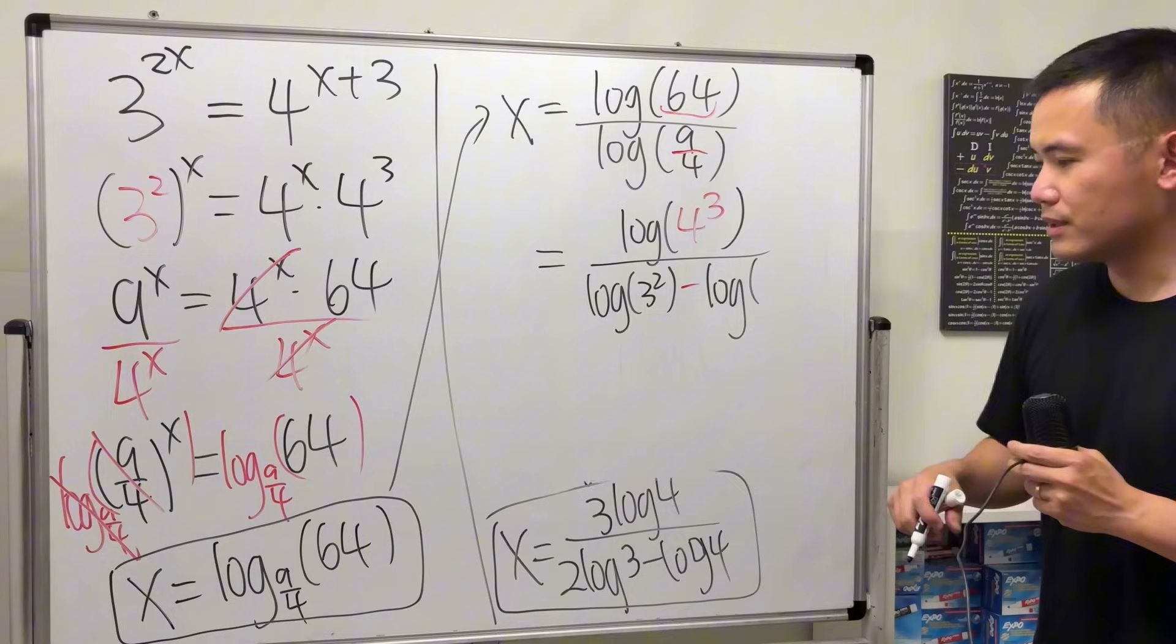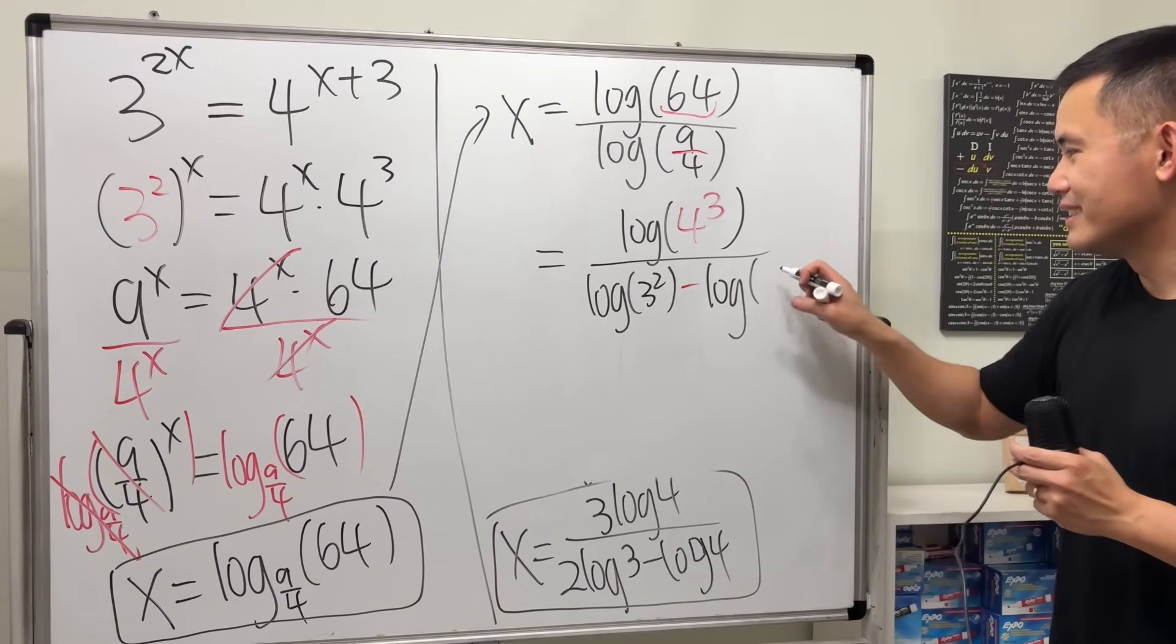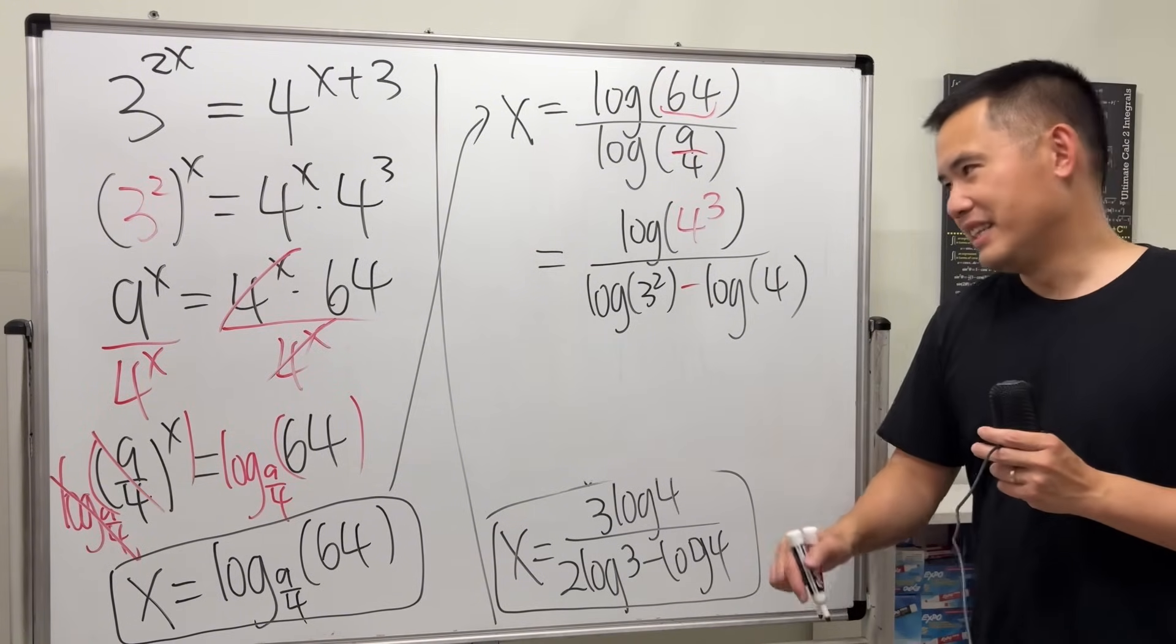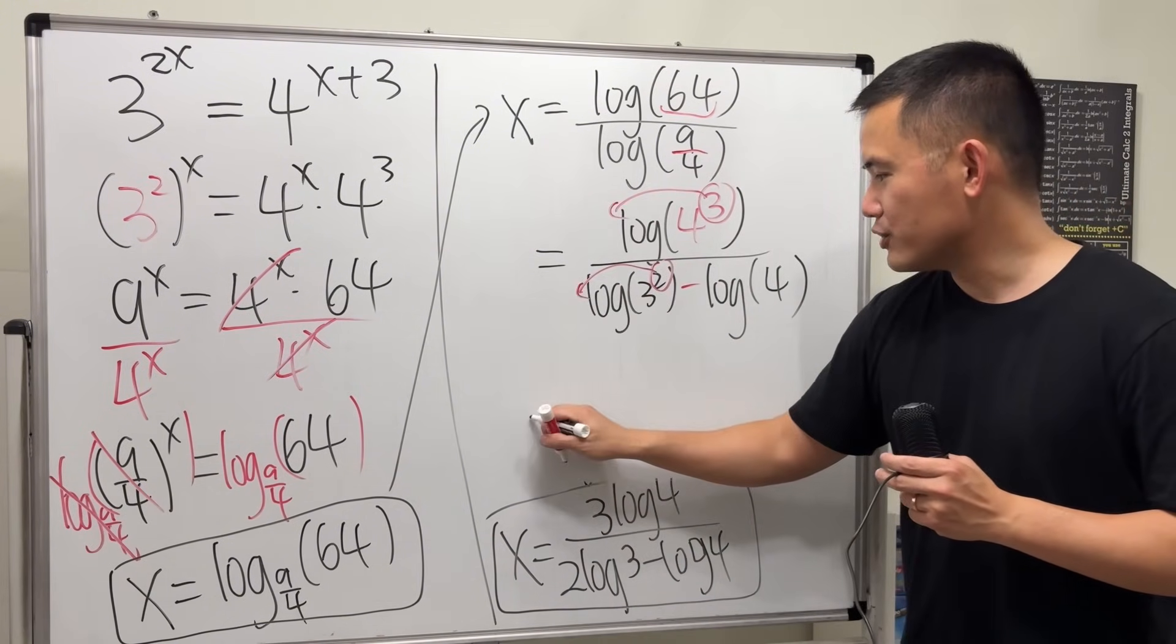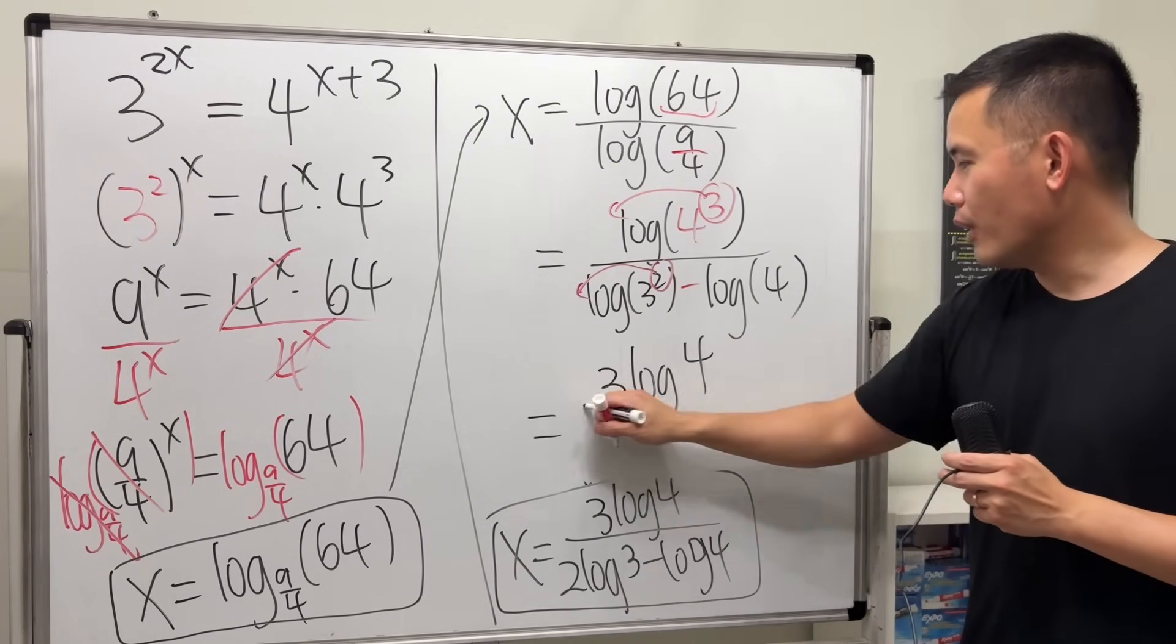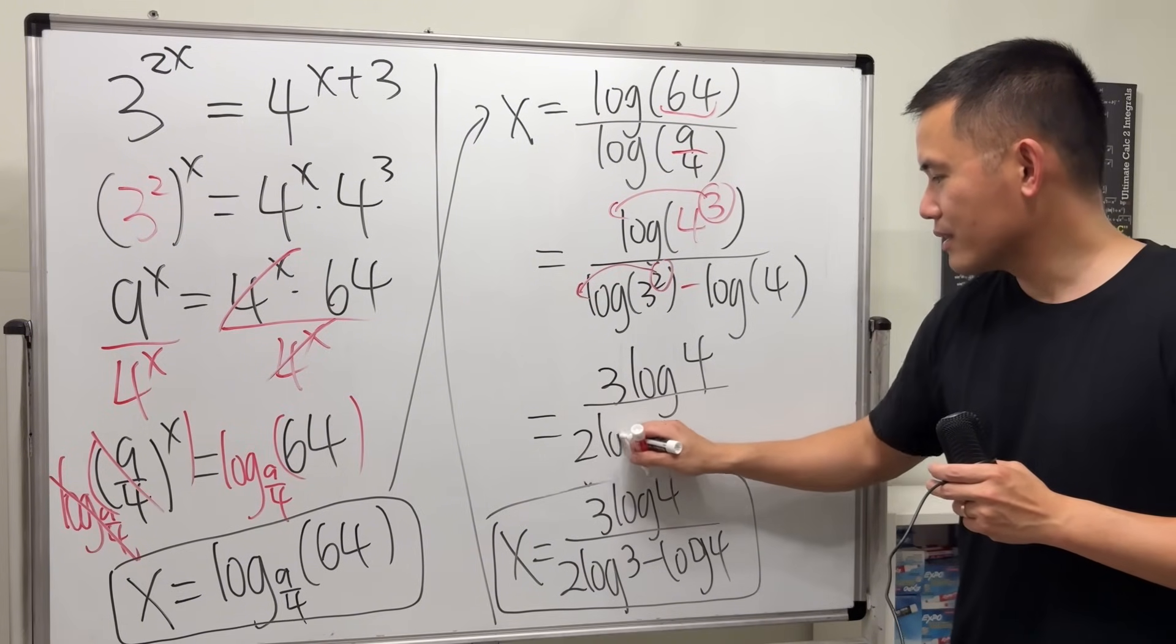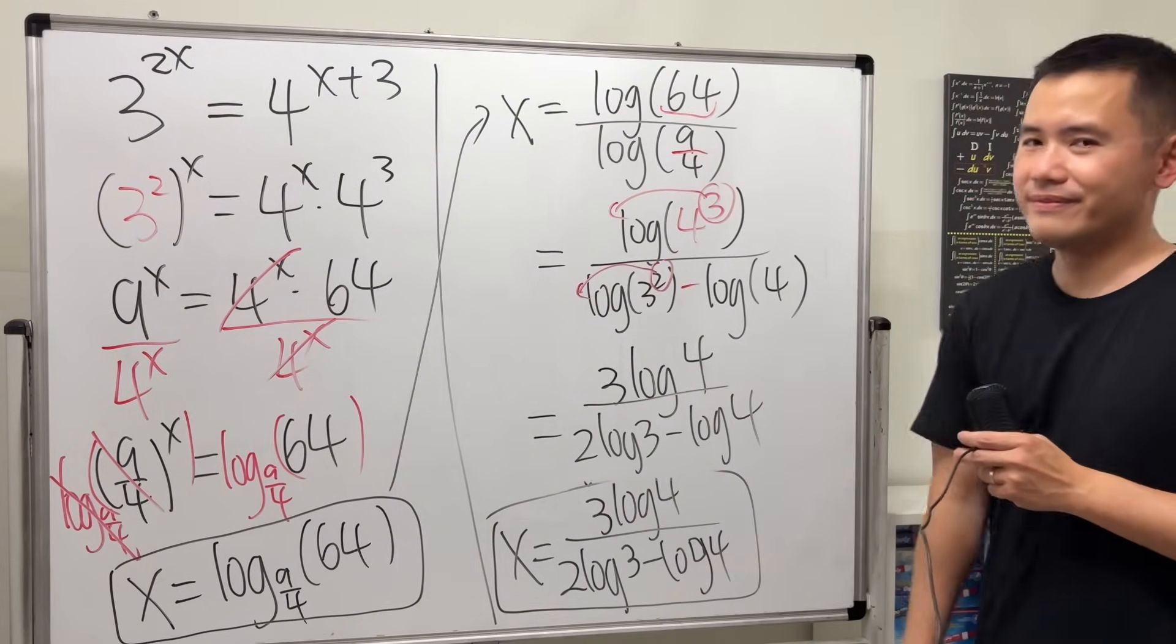Which is the same as, well, we can write it as like 2 squared, but I'm just going to keep it with 4. Then we can bring the power to the front, bring this power to the front. And ladies and gentlemen, we have the same answer: 3·log(4) over 2·log(3) - log(4). Done.